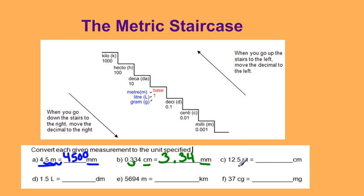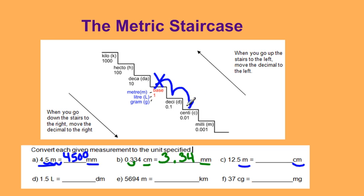12.5 meters converting to centimeters. Meter is my base stair, and this time I'm going down to the centimeter stair — two stairs down, which means two decimal places to the right. I'm going to be at 1,250 centimeters.